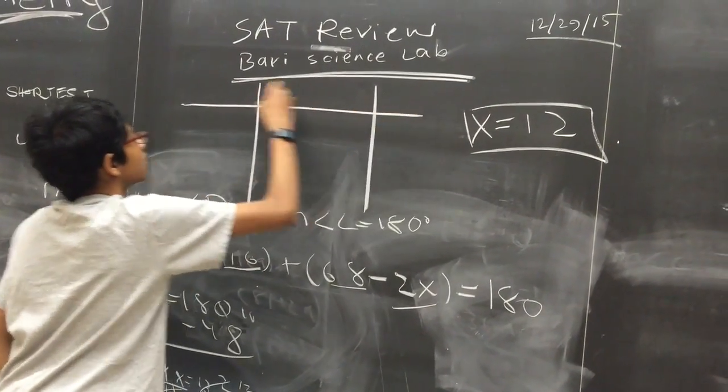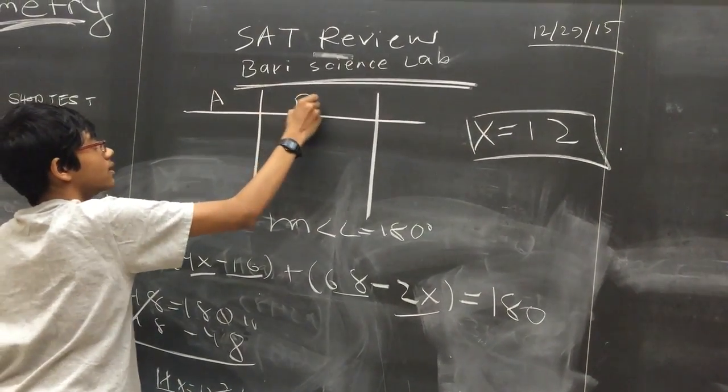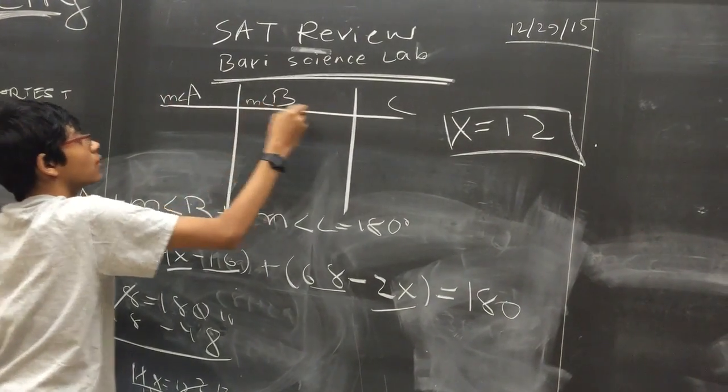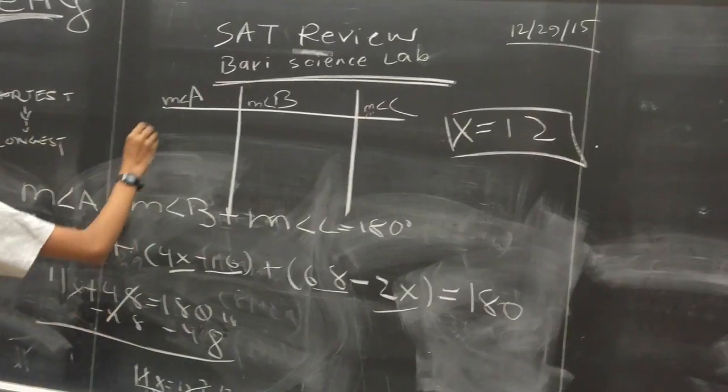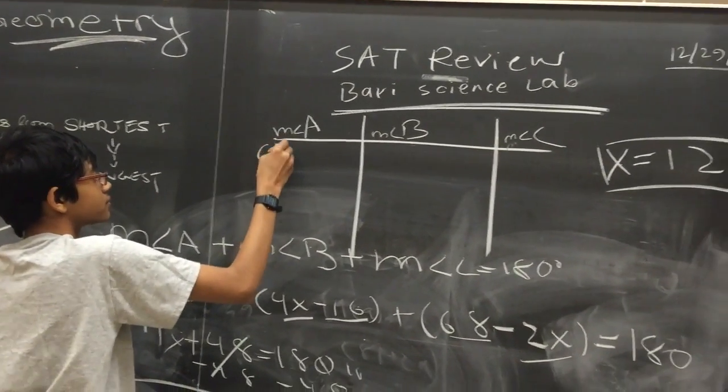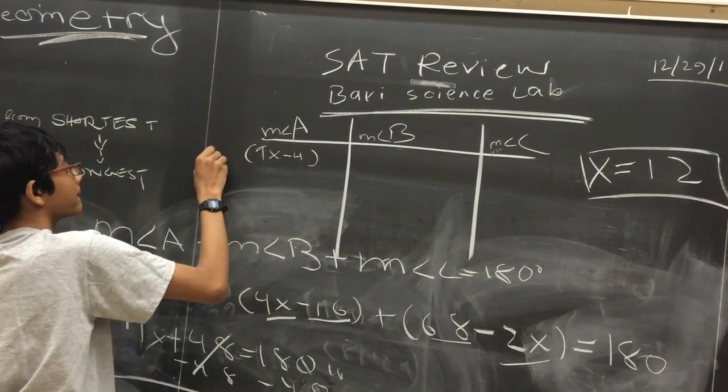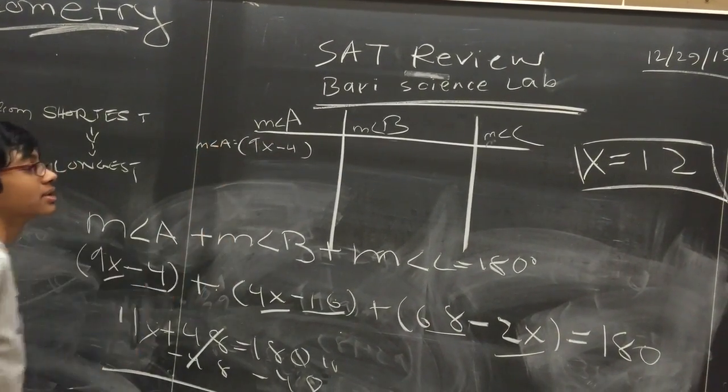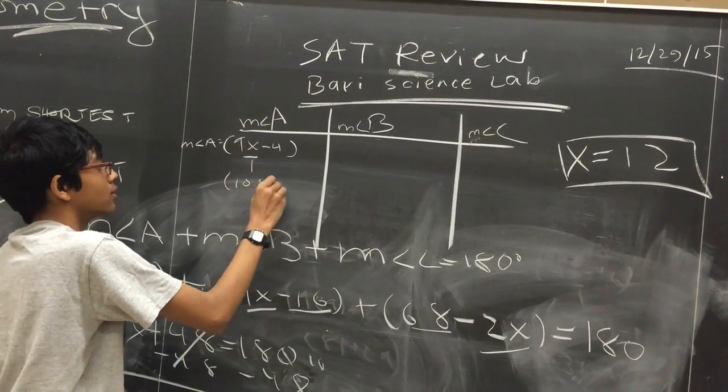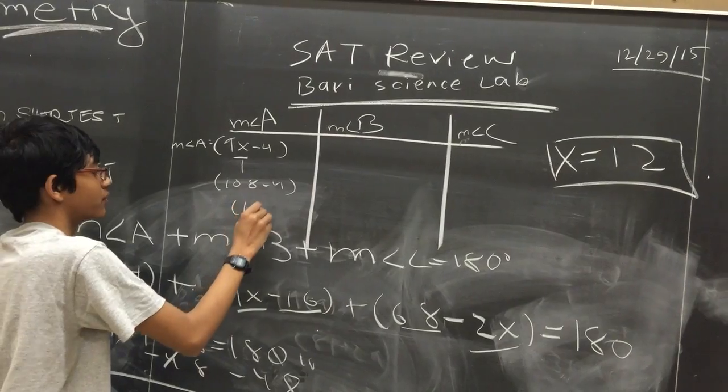So this is angle A, angle B, angle C. The expression for angle A is 9x minus 4. We substitute 12 into that. We get 108 minus 4, which is 104.